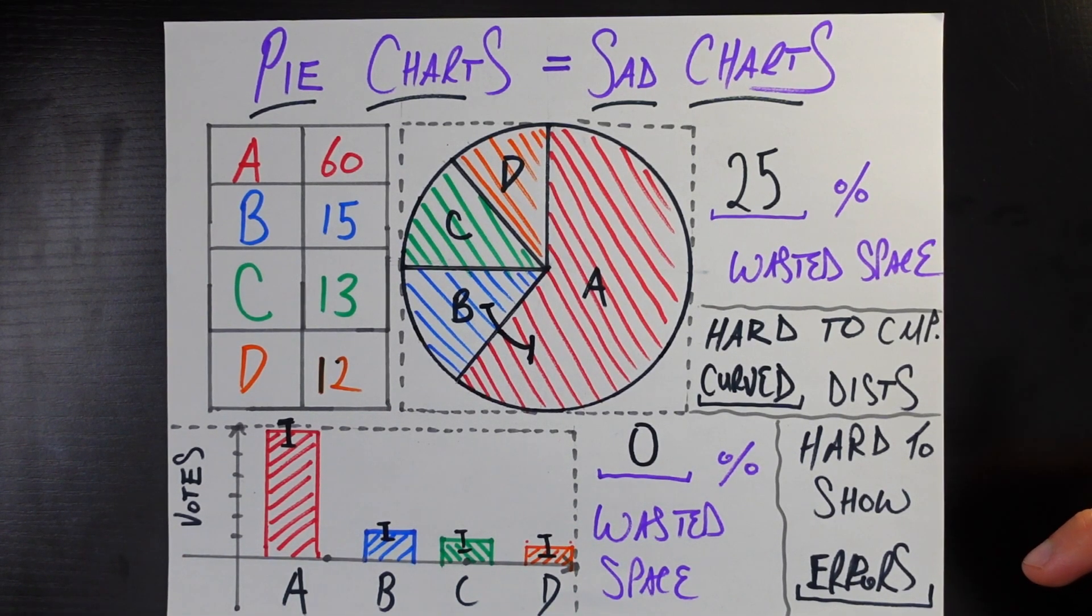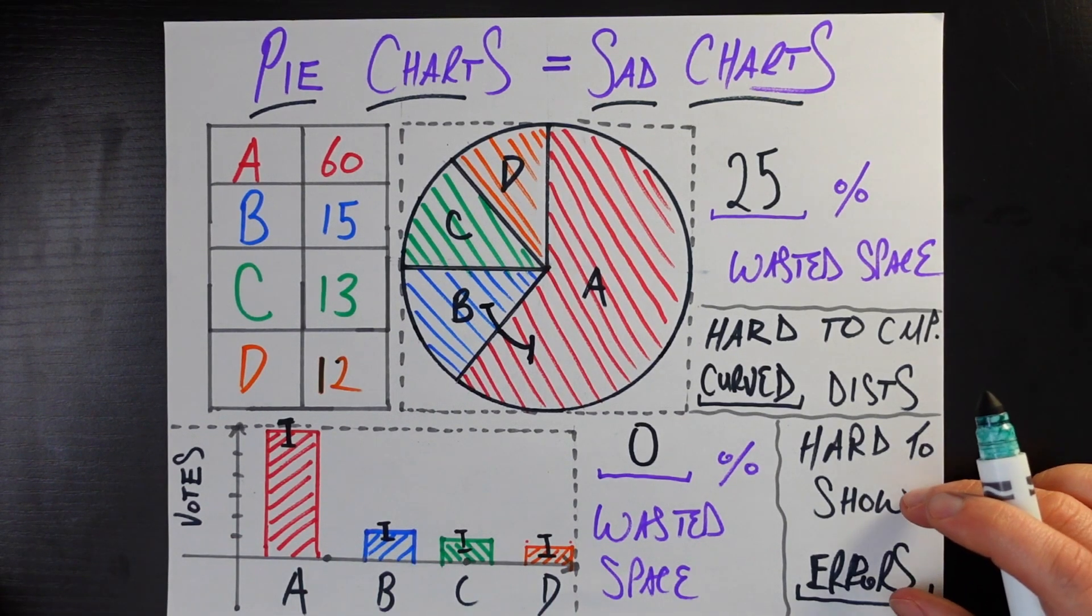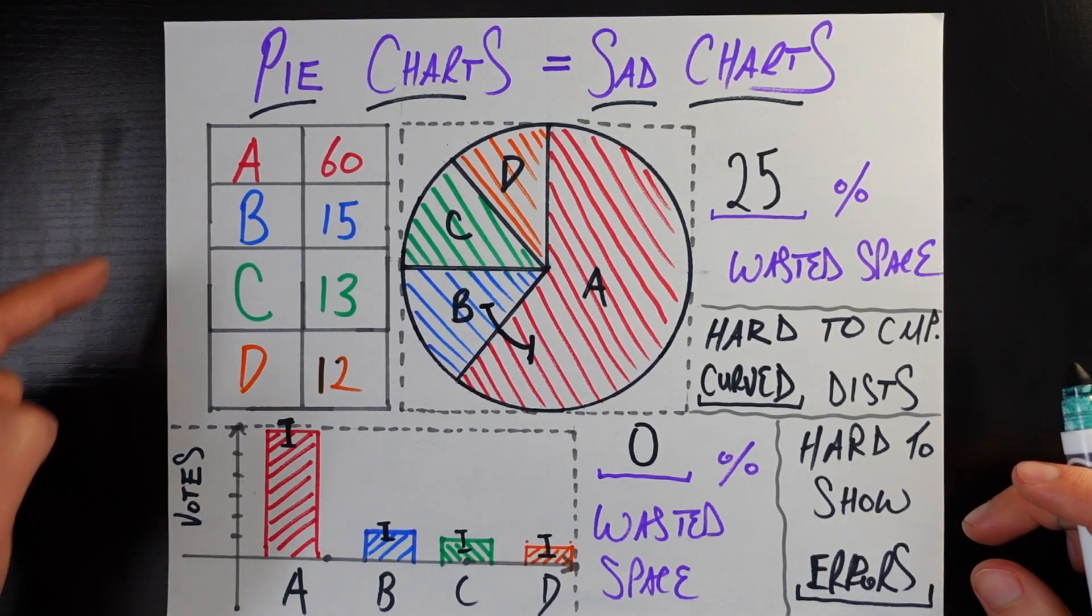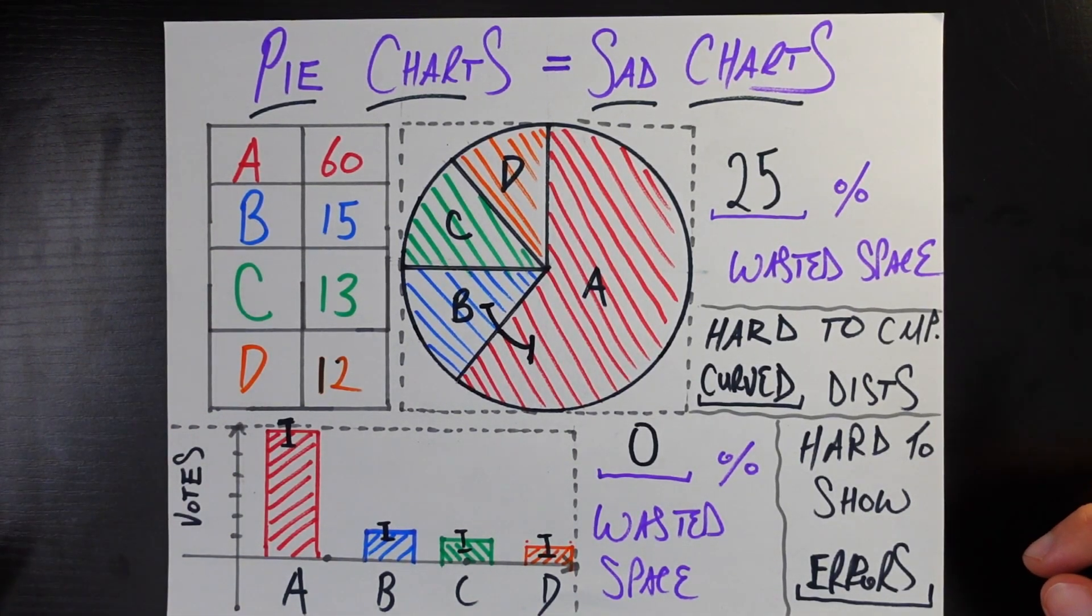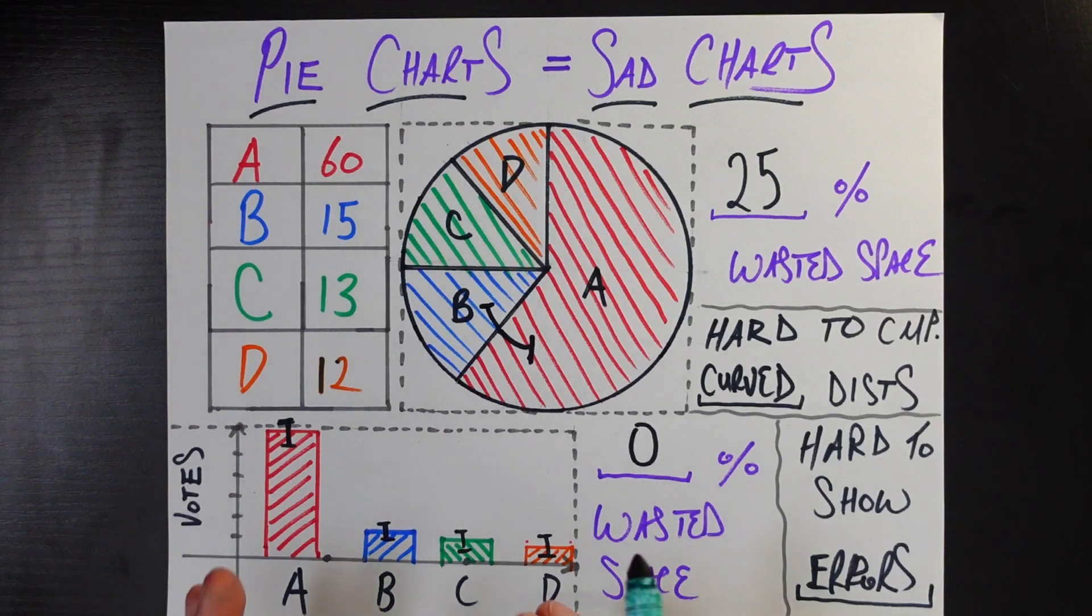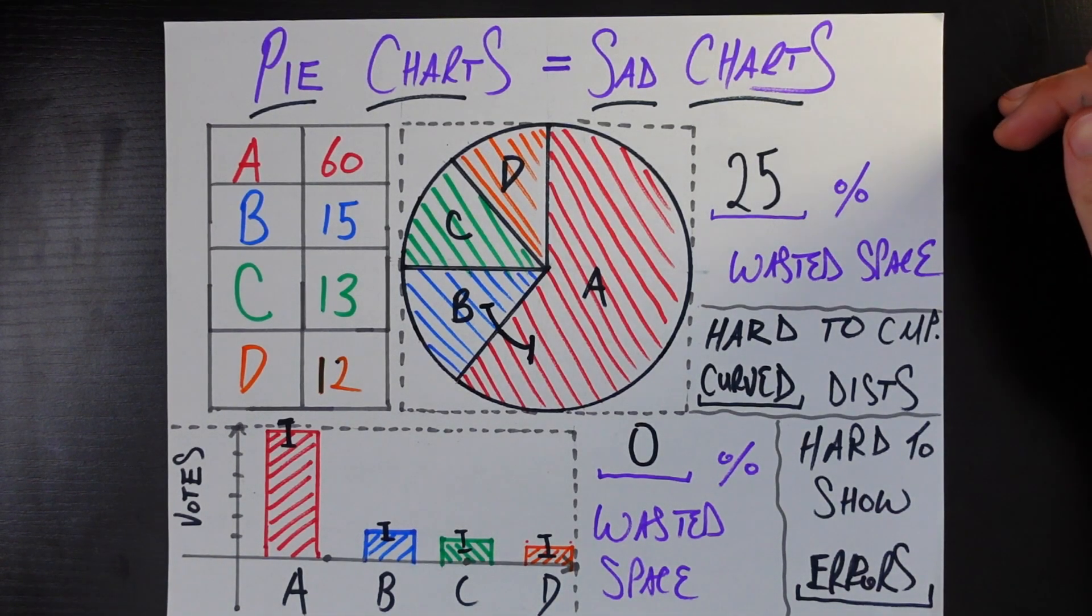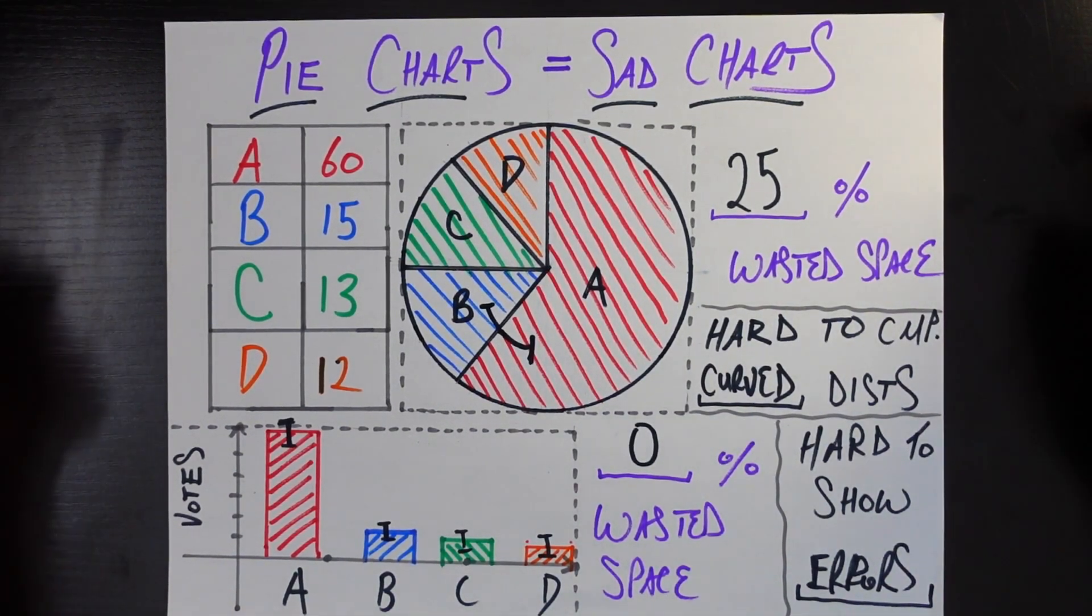But if you're looking at B versus C versus D, well, the error bars are so intersecting with each other that I can't confidently say that B is going to get more votes than C in the real election or C is going to get more votes than D in the real election. So the simple bar chart actually solves all three of these problems with the sad, sad pie chart.